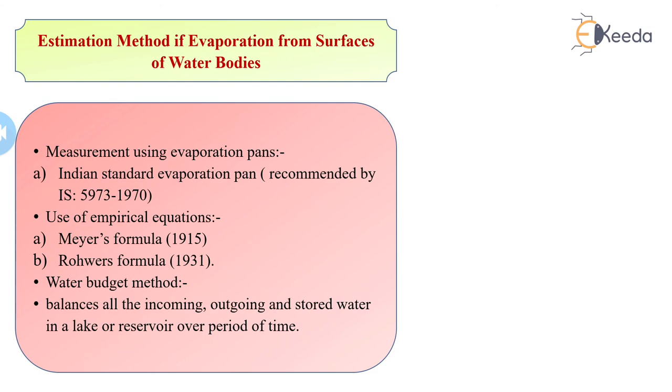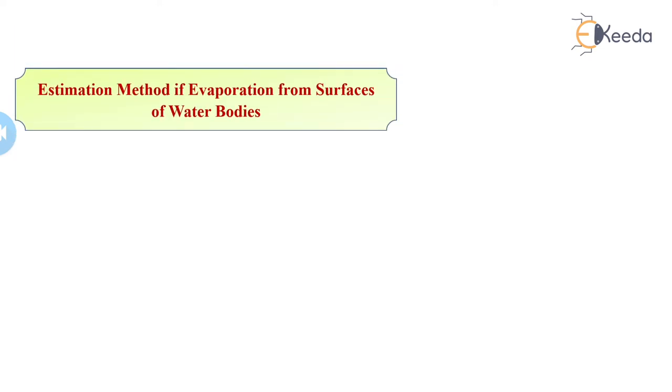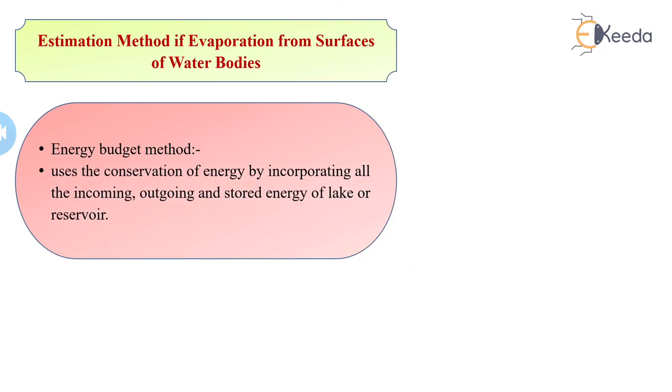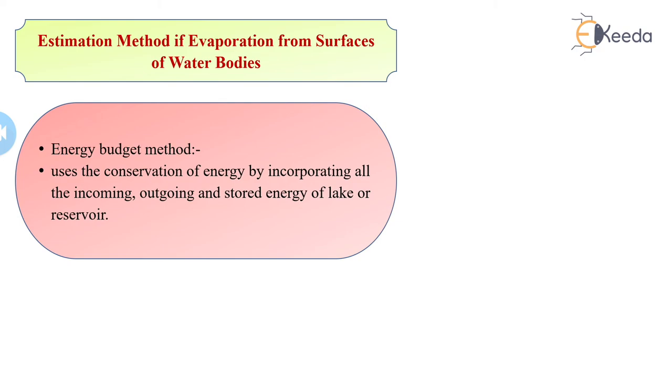Next method is energy budget method. It uses the conservation of energy by incorporating all the incoming, outgoing, and stored energy of a lake or reservoir. This is about the evaporation loss.